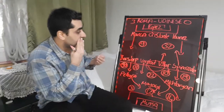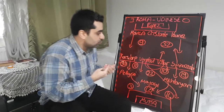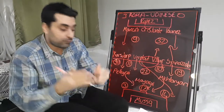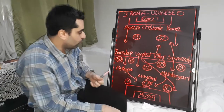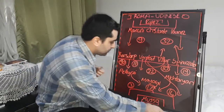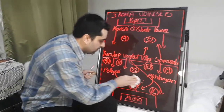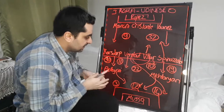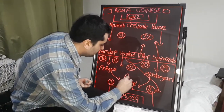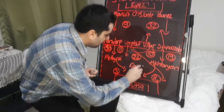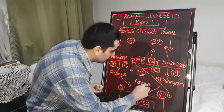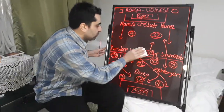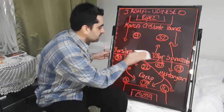Paolo Fonseca made some substitutions in the second half. First substitution: Borja Mayoral came off and Jackal replaced him. Then Werotut came off and Pedro came on.